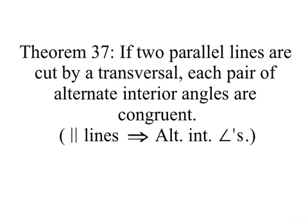We introduce Theorem 37. If two parallel lines are cut by a transversal, each pair of alternate interior angles are congruent. That's the converse of the theorem that states that if two lines are cut by a transversal such that a pair of alternate interior angles are congruent, the lines are parallel.